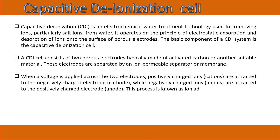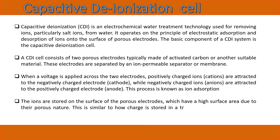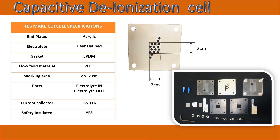Negatively charged ions (anions) are attracted to the positively charged electrode (anode). This process is known as ion adsorption. The ions are stored on the surface of the porous electrodes, which have a high surface area due to their porous nature. This is similar to how charge is stored in a traditional capacitor, hence the name capacitive deionization.